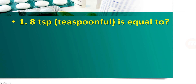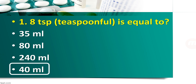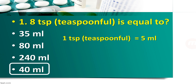Question number 1: 8 teaspoonful is equal to — 35 ml, 80 ml, 240 ml, or 40 ml? The right answer is 40 ml. Here is the right conversion: 1 teaspoonful is equal to around 5 ml. So, 8 into 5 is equal to 40 ml for 8 teaspoonful. Aapko sirf yaad rakhna hai ki 1 teaspoonful is equal to 5 ml hota hai, so any conversion question you can easily solve.